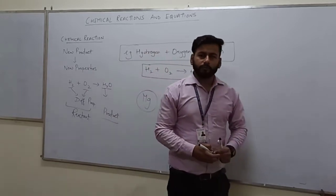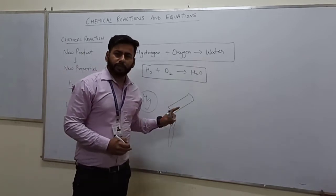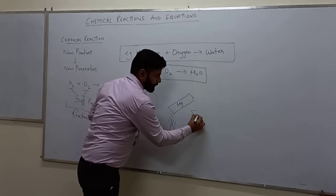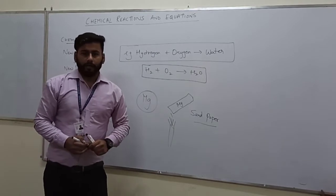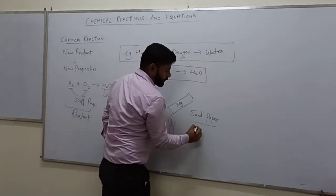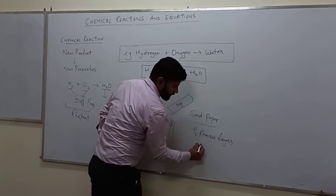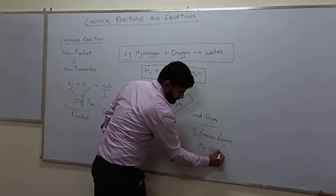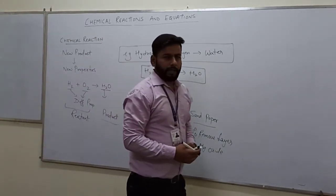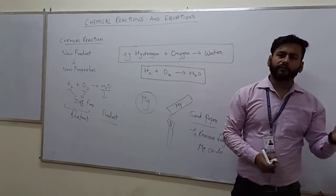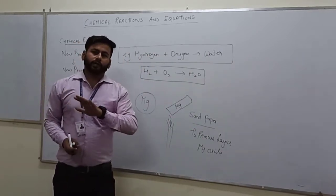You will be asked about what your observation will be. Whenever a magnesium ribbon is burned, it is cleaned with sandpaper. You will be asked why it is cleaned with sandpaper. The answer is to remove the basic layer of magnesium oxide or magnesium carbonate. Because if magnesium is kept in open air, it will acquire a slight layer of that oxide. So to remove that layer, we rub it with sandpaper, because if you do not rub it, the burning will not be proper.